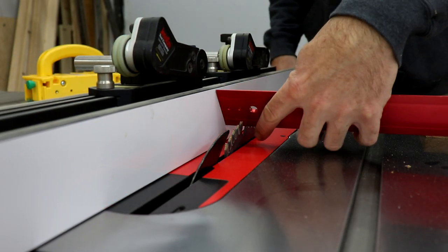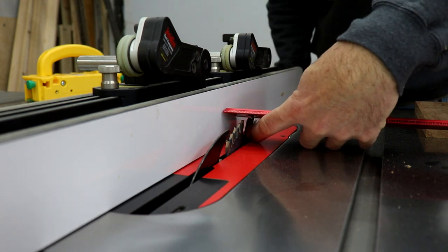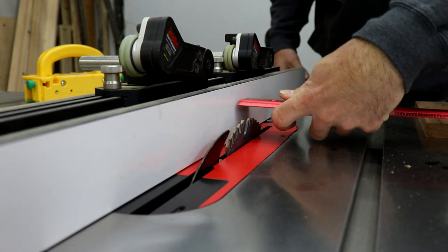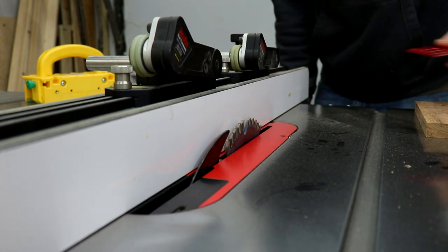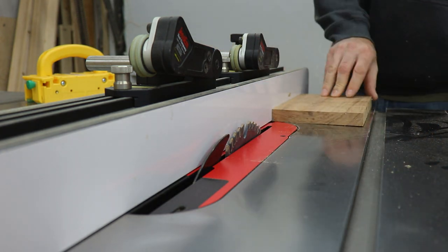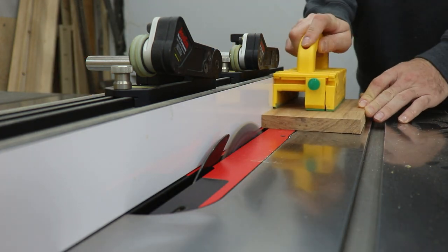I start out by cutting a strip that's the same width of the blade that I plan to use for the box joints. In this case, it'll be a quarter inch wide. I actually cut a couple strips just a little bit different size so I can select the one that fits best later on.